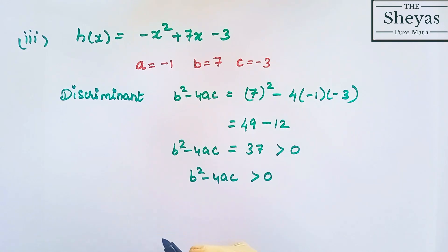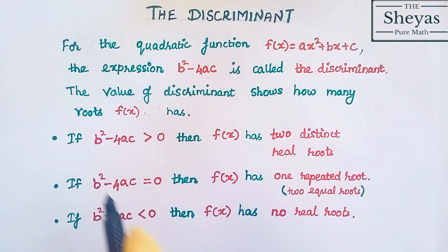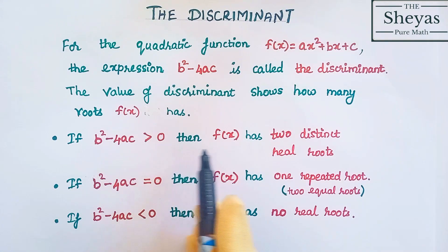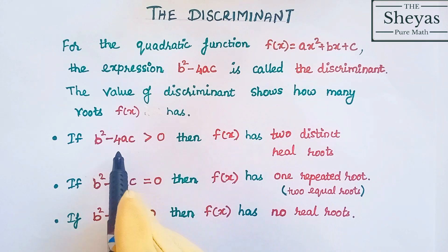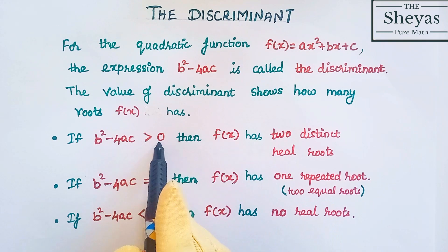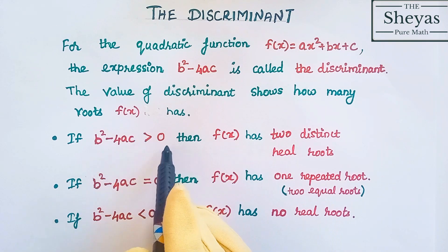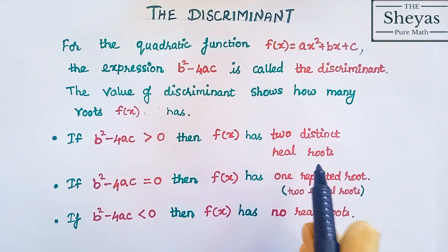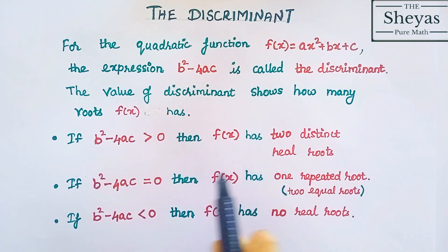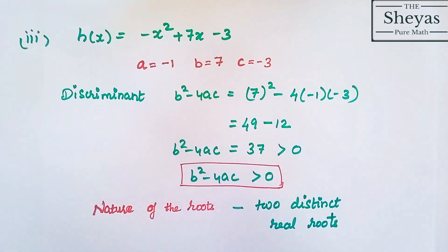Now let us discuss the nature of the roots. According to the first condition, if the discriminant is greater than 0, then we can say that it has two distinct real roots, or two different real roots. So the nature of the roots is two distinct real roots. Thank you.